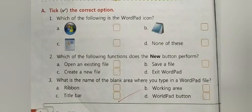Number two: which of the following functions does the New button perform? Open an existing file, save a file, create a new file, or exit WordPad. So we know that the New button performs the C option, create a new file. So in front of option C you will put a tick mark sign.